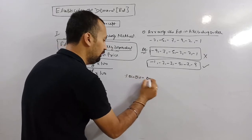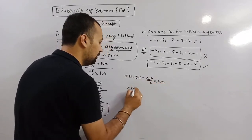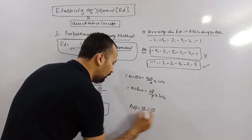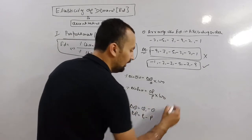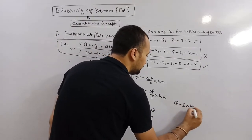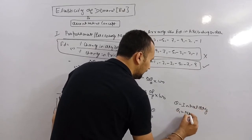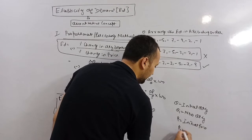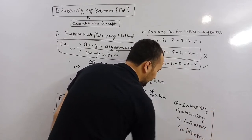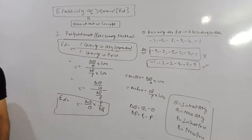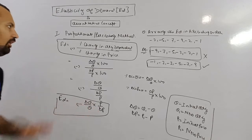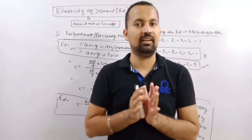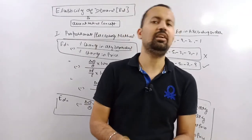For reference: percentage change in quantity equals delta Q upon Q into 100, and percentage change in price equals delta P upon P into 100, where delta Q equals Q1 minus Q, delta P equals P1 minus P, Q is initial quantity, Q1 is new quantity, P is initial price, and P1 is new price. The formula for elasticity of demand is: Ed equals minus delta Q upon Q into P upon delta P, or equivalently, minus percentage change in quantity demanded upon percentage change in price. Now we move to the next part of this method.